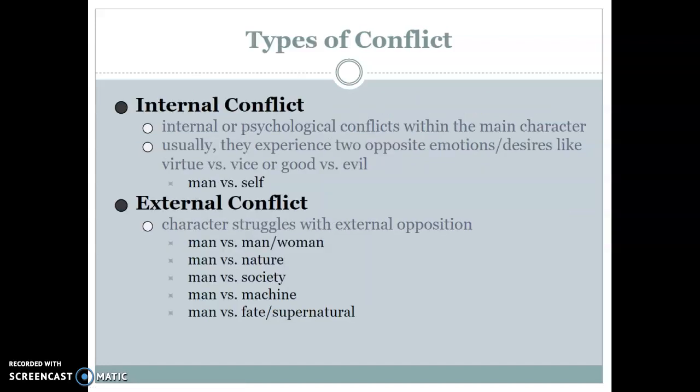There are two types of conflict: internal and external. Internal conflict is psychological conflict within the main character — usually experiencing two opposite emotions or desires, like the desire to be good but moments of evil. We typically call this man versus self. External conflict is always outside of the character: man versus man, man versus nature, man versus society and social structures, man versus machine, and man versus fate or the supernatural. Man versus fate we would see in classical Greek tragedies like Oedipus.